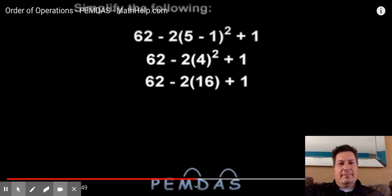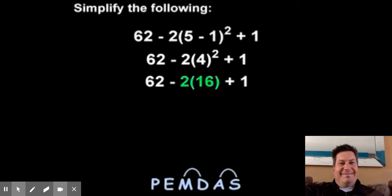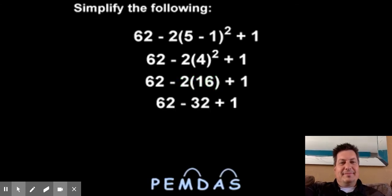Next comes multiplication and division. So we multiply 2 times 16 to get 32, and we have 62 minus 32 plus 1.